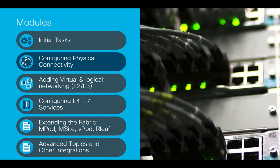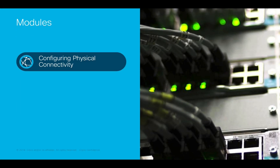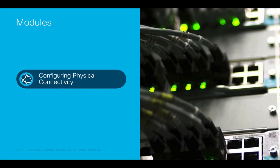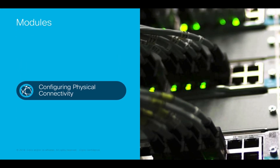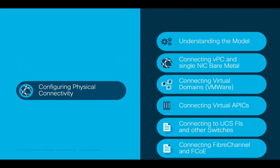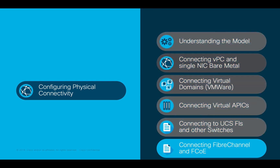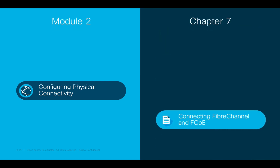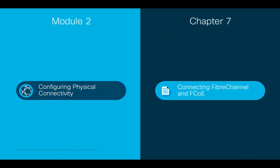Welcome to ACI, the Network Made Simple learning series. In this video we will cover Module 2, Configuring Physical Connectivity, Chapter 7, Connecting Fiber Channel and FCOE.